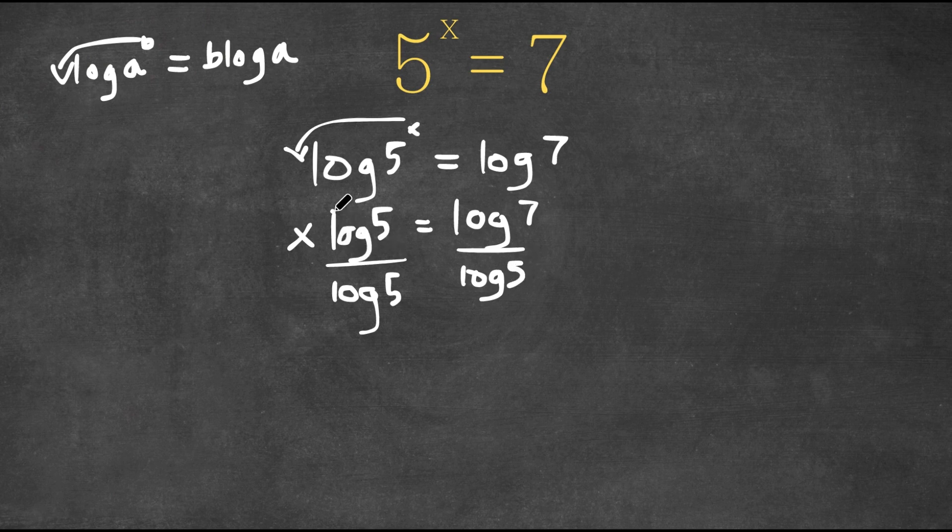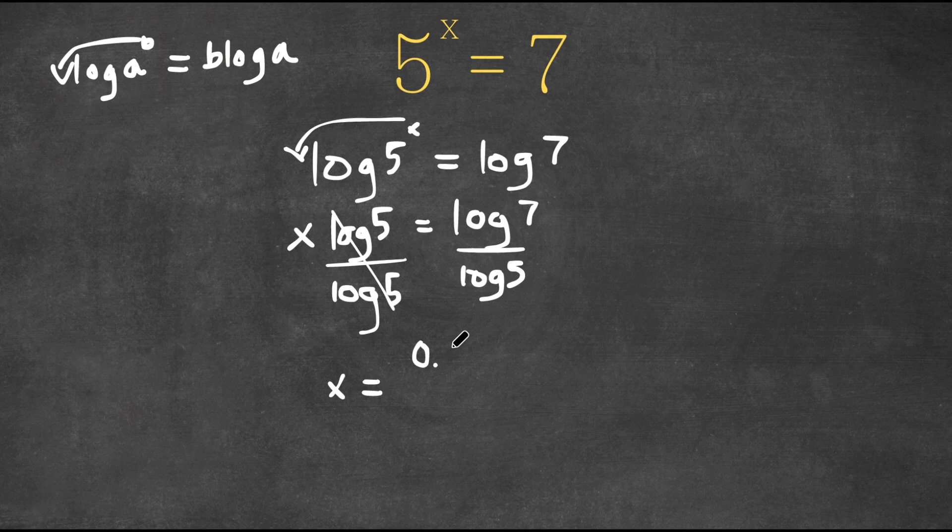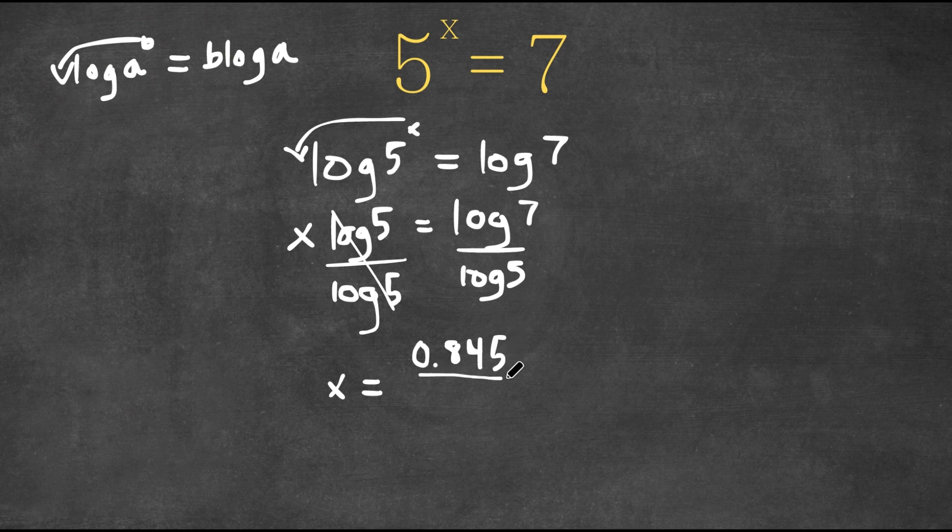So now for our left-hand side, these two cancel out. So we would have x is equal to log 7, which equals 0.845 approximately, and we're dividing this by log 5, which is approximately equal to 0.699.